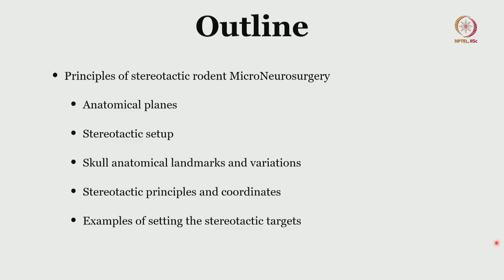Hello everyone. We are continuing with the module of rodent micro neurosurgery. In the previous few lectures we covered human neuroanatomy, comparative neuroanatomy, and the most important section of rodent neuroanatomy as well. Since we have a fair amount of idea on the neuroanatomy, from now on we will be applying that knowledge to achieve more knowledge on the neurosurgical aspects for stereotactic apparatus and its use for surgical purposes. This is the outline for today's lecture.